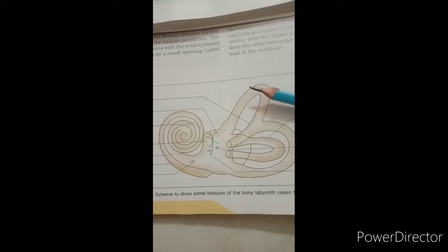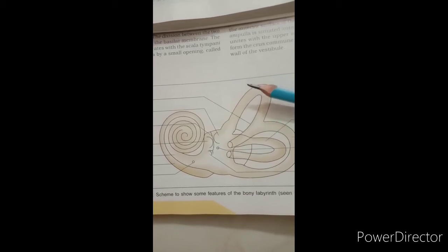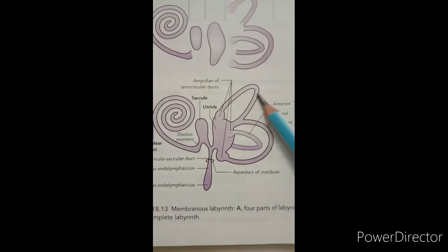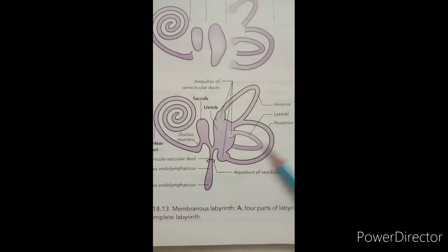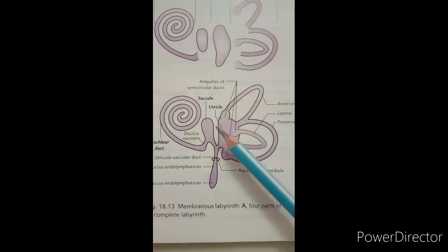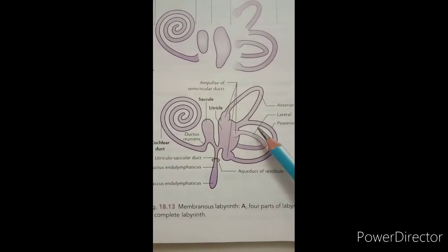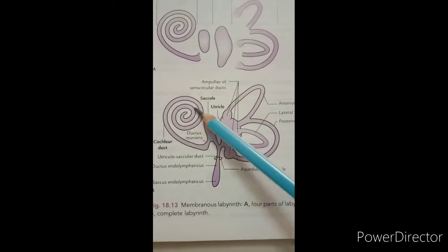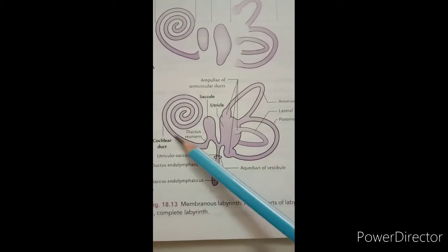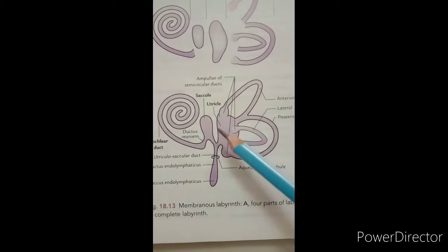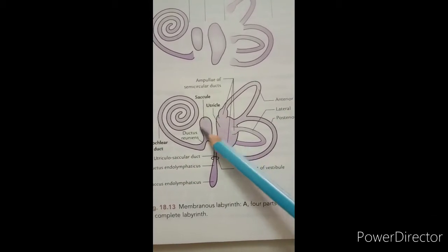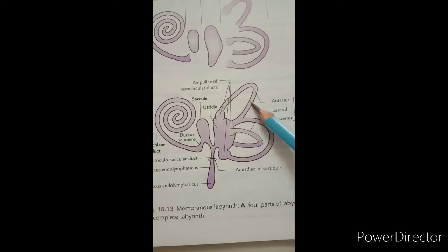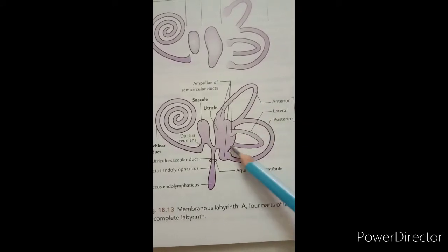The membranous labyrinth consists of four parts: first, the cochlear duct — the round part visible here; then the saccule, then the utricle, and the semicircular canal.